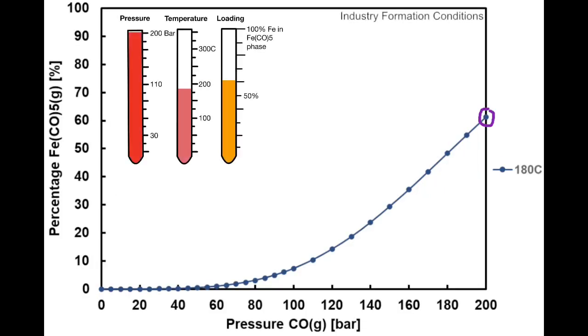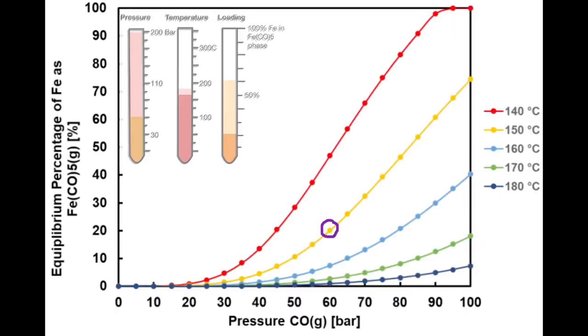The industry produces carbonyl iron at pressures above 200 atm. This is not practical for lunar deployment. However, with a modest reduction in formation temperature, adequate formation is predicted at 60 atm or less.